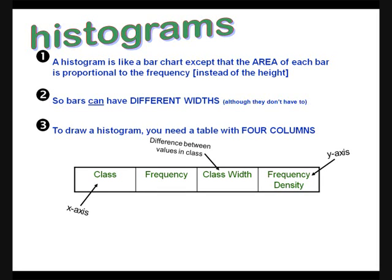To draw a histogram, you need a table with four columns: the classes, which provide your values on the x-axis; the frequencies; the class widths; and the frequency densities, which provide your values on the y-axis.